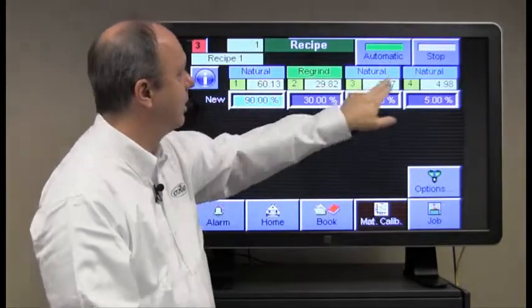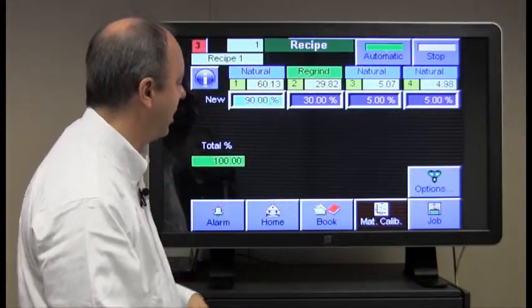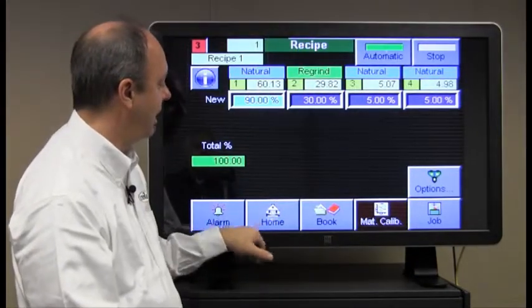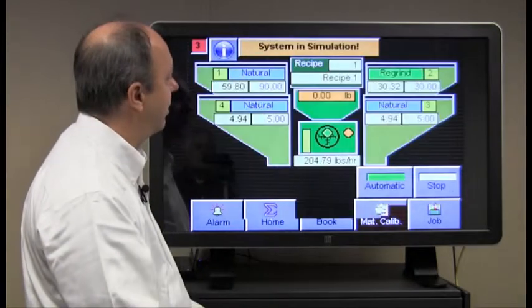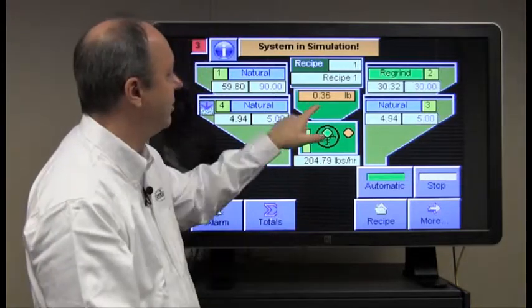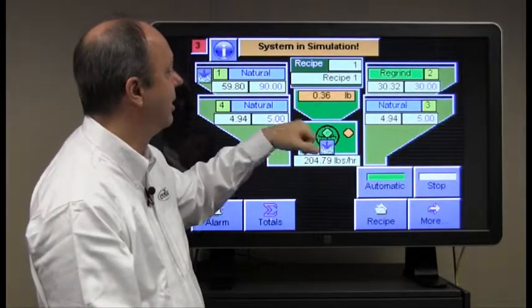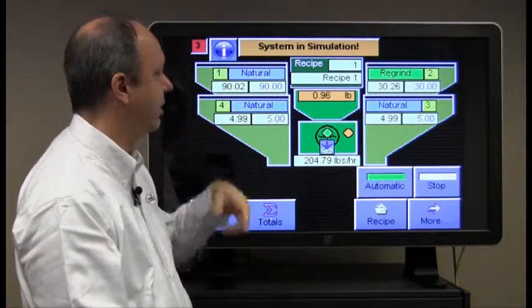We can commit this recipe by pushing automatic here and let's return to the home screen and see how that affects the operation of the batch. So on the home screen you can see that the regrind is always fed first. It puts in 30% of the batch on the regrind and then it does the minor ingredients finishing with the major ingredient.